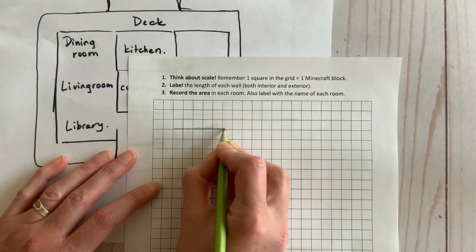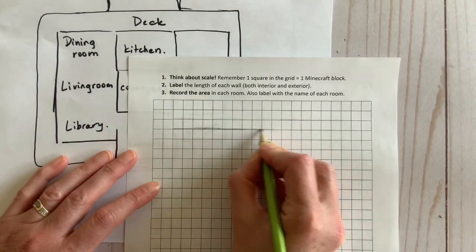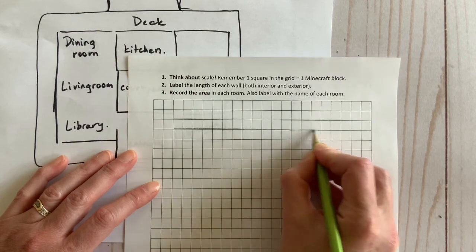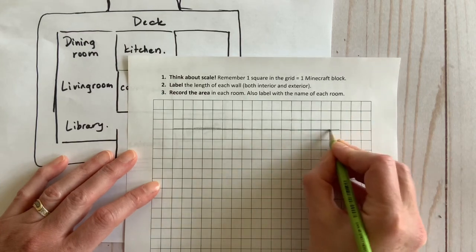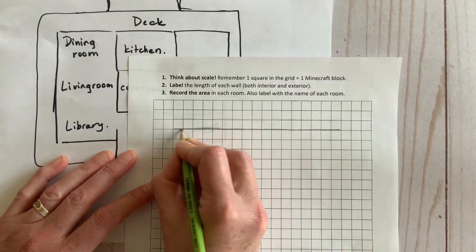When sketching your good copy, it now makes sense to outline the entire length and width of your house. That way, you don't accidentally run out of room.